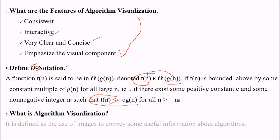What is algorithm visualization? It is defined as the use of images to convey some useful information about algorithm. That visual representation of algorithm is our algorithm visualization.